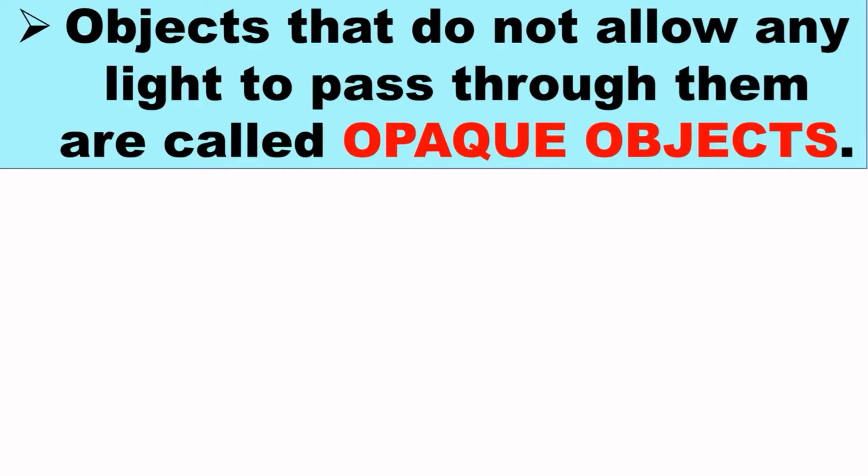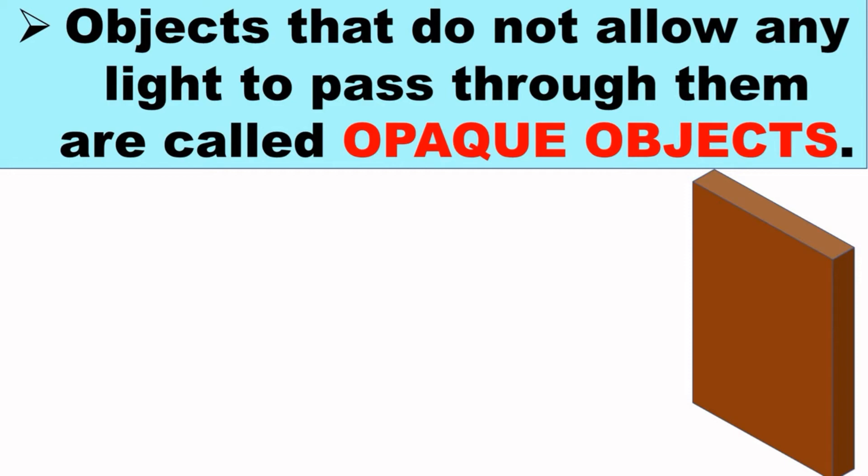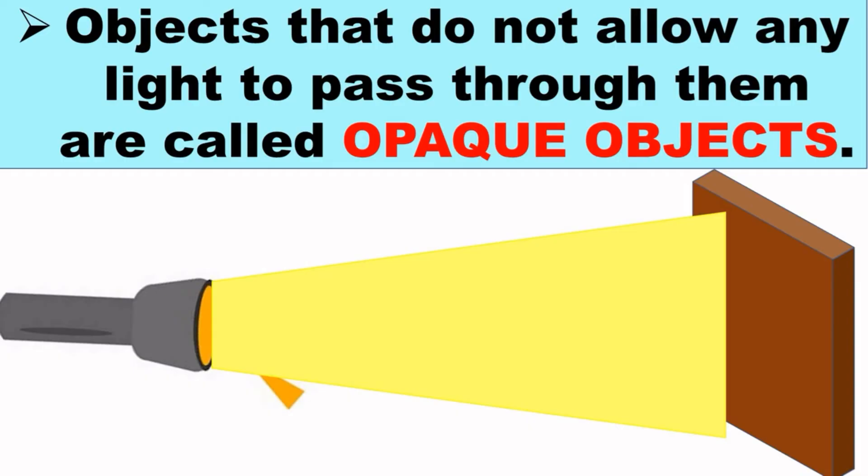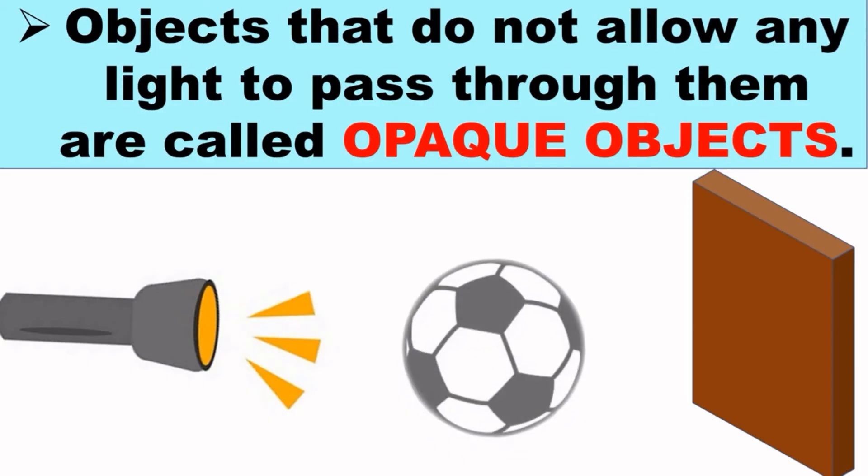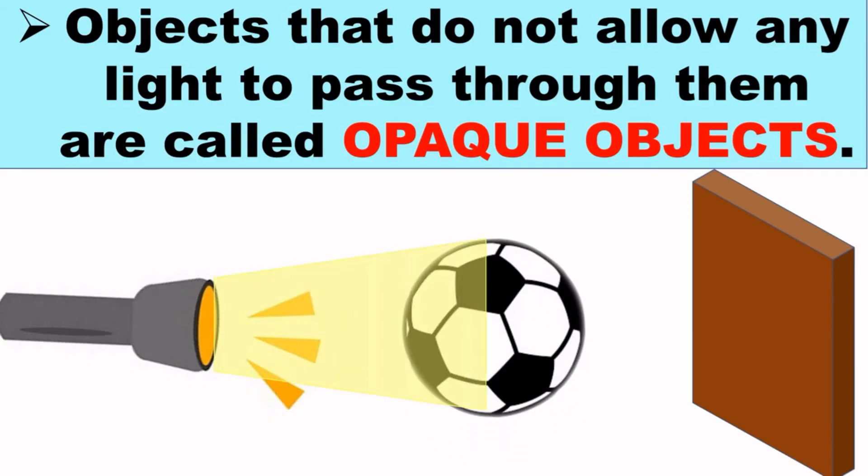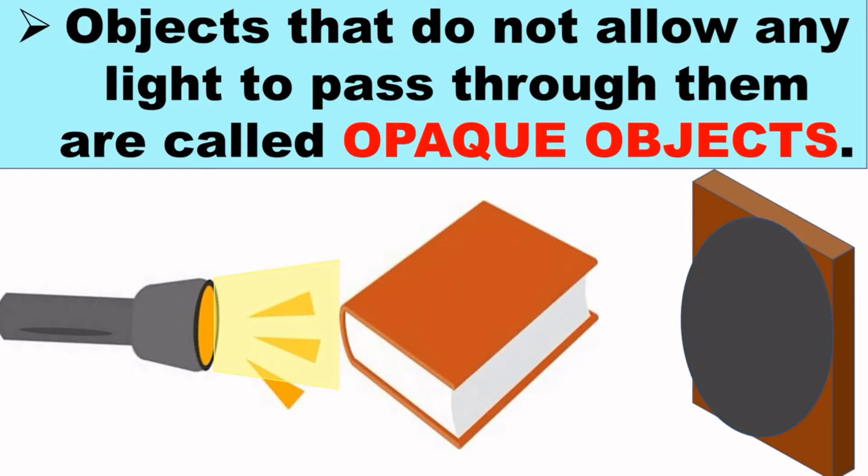Objects that do not allow any light to pass through them are called opaque objects. So, let's do an activity. Take a cardboard and a torch. Switch on the torch. You will see that the light goes straight to the cardboard. Now, take a football and switch on the torch. Does the light hit the cardboard? No. Why? Because ball blocks the light. So, ball is an opaque object.